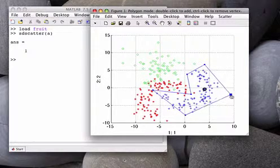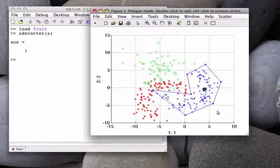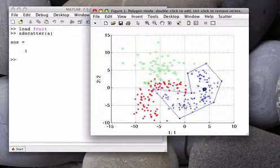You can still adjust the points, add a new point with a double click on a vertex, or remove it with the right mouse click. You may, of course, move the whole polygon.